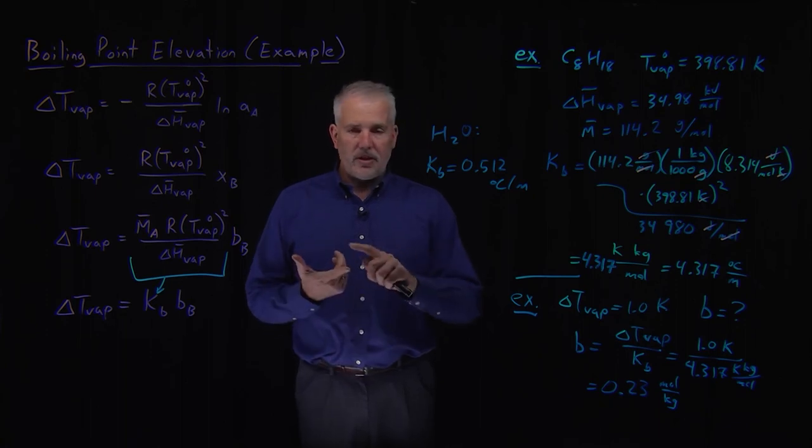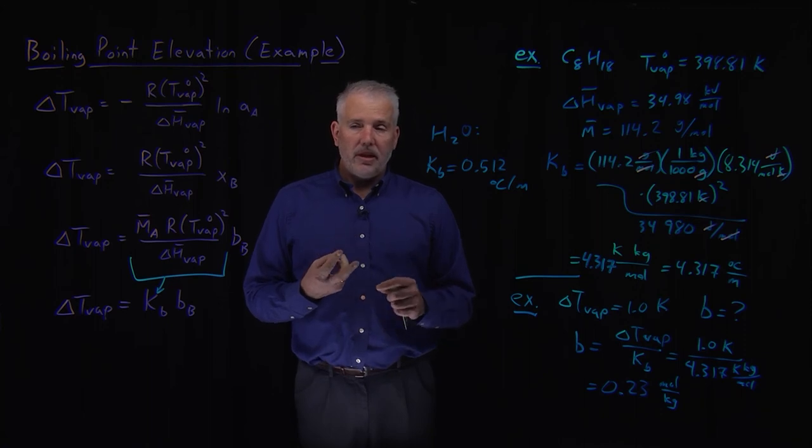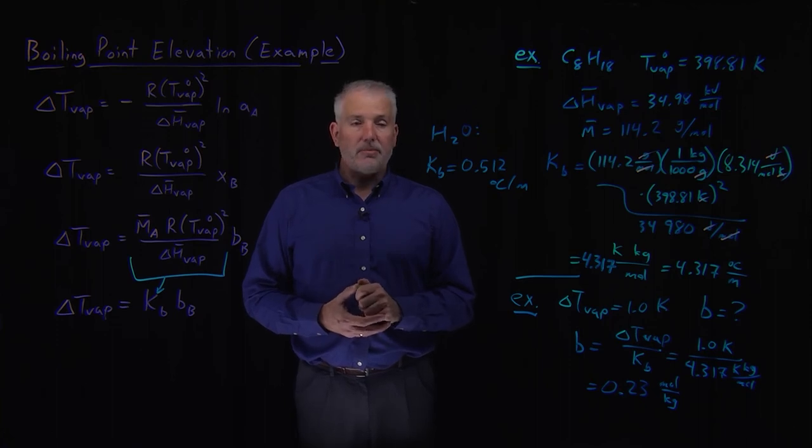So we've considered freezing point depression and boiling point elevation as two of our colligative properties so far, as well as vapor pressure lowering. There's a fourth one that we'll consider next, and that's the osmotic pressure.